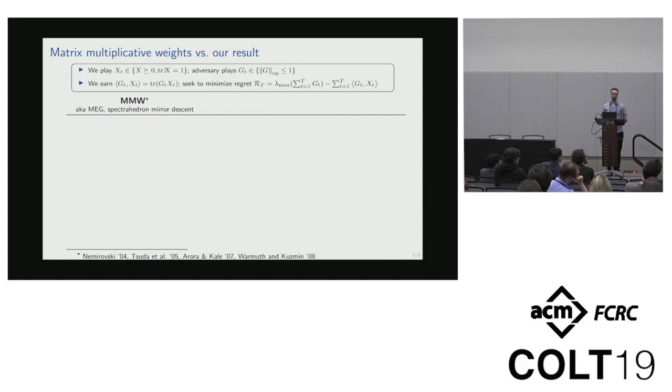One algorithm that makes the regret small is called matrix multiplicative weights, also known as matrix exponential gradient and spectrahedron mirror descent. It's the direct matrix analog of standard multiplicative weights. We sum up all gains seen so far, multiply by step size, then exponentiate. Since we're exponentiating a matrix, it's a positive matrix, so we normalize it to have unit trace by dividing by the trace.